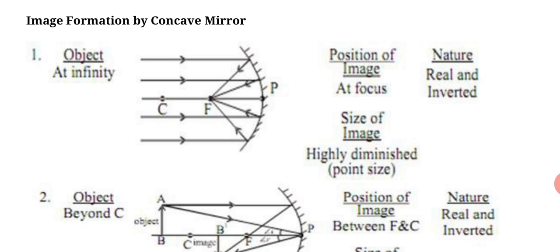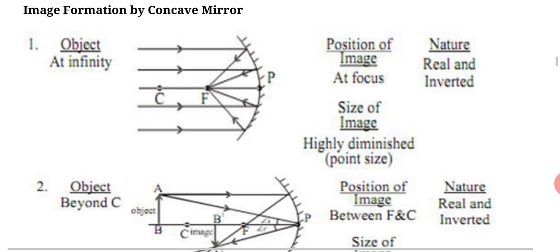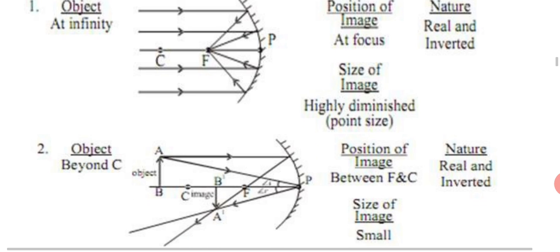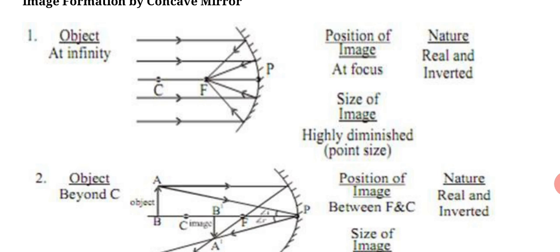At first, when object is at infinity, all rays come from infinity and reflect on reflecting surface of mirror. After reflection they meet at a point called focus. So position of image at focus, nature real and inverted. It means whenever image forms in front of mirror, it will always be real and inverted - upside down. If object is A B, it will be B A. Size is highly diminished, point size.